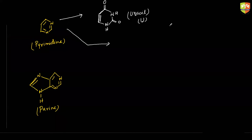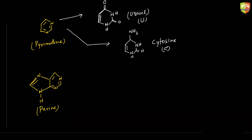Now cytosine: the difference is that instead of C double bond O, we have NH2 present here. So the structure has NH2 — this is the structure of cytosine, represented by capital C.